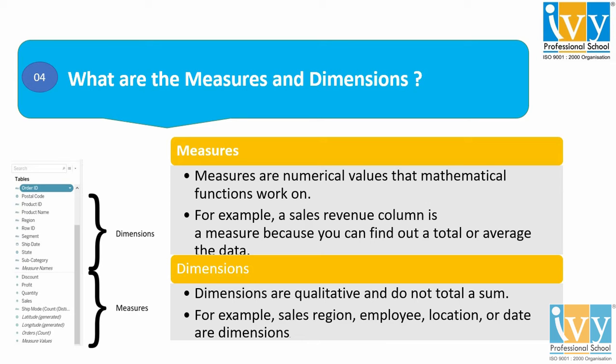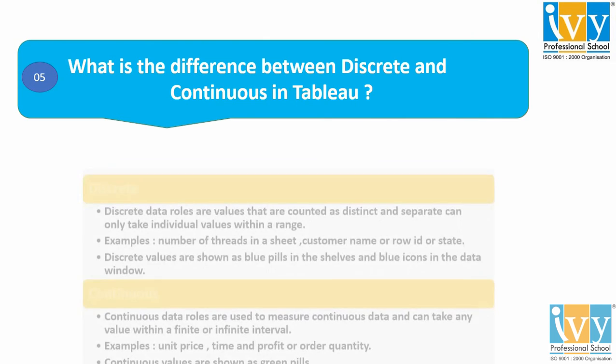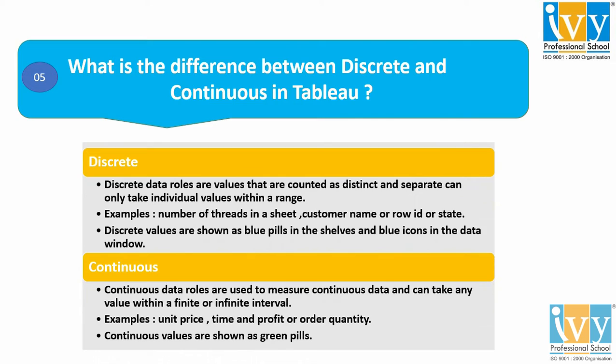Moving on to the last question: what is the difference between discrete and continuous in Tableau? So in Tableau, if a field contains values that are names, dates, or geographical locations, or that may be counted as distinct and separate, that is an example of discrete. We take all those values as discrete values.